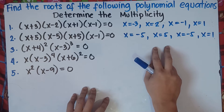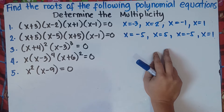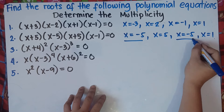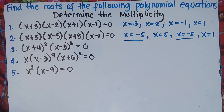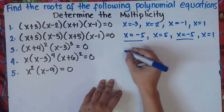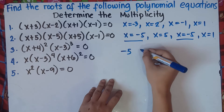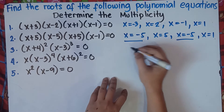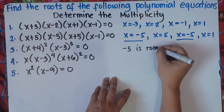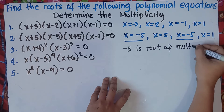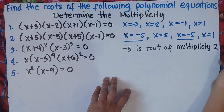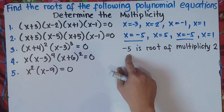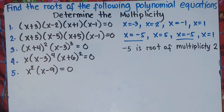Now check: do we have roots which are repeating? Yes — we have x equals negative 5 appearing twice. So we can apply multiplicity. We can write this as: negative 5 is a root of multiplicity 2. You count how many times negative 5 is repeating — we have 2 times. That's how you answer for multiplicity.